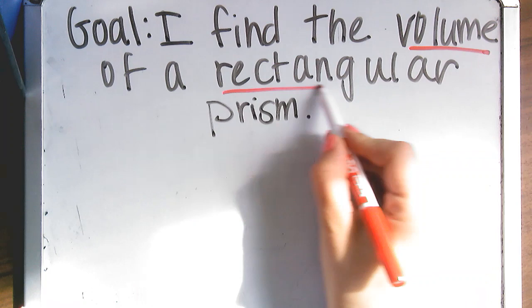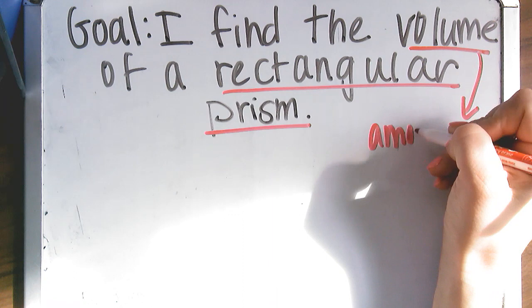Today, our goal is to find the volume of a rectangular prism. So volume, again, is the amount of space something occupies.